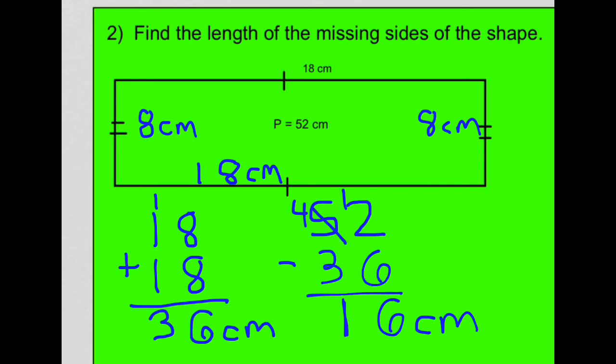Now we should double check it. 18 and 18 we know is 36 plus 8 is 44 and plus another 8 is 52. And that's exactly what it should be because we know the entire distance around this shape is 52 centimeters.